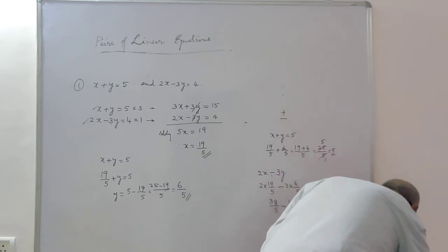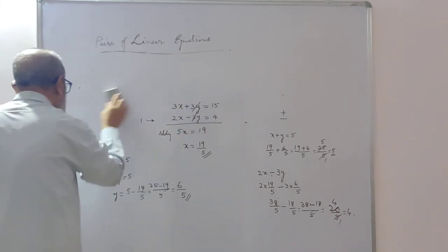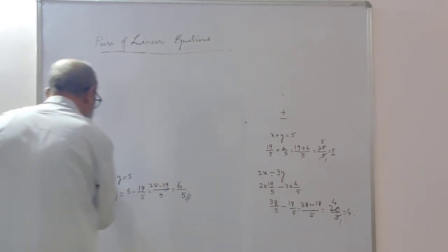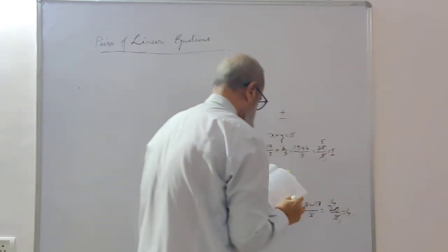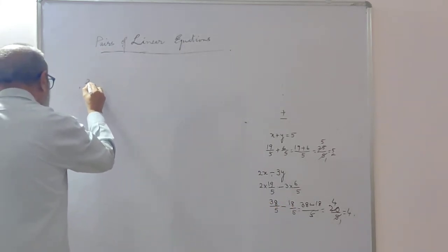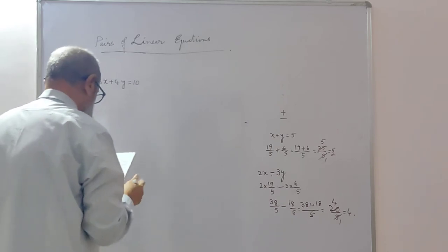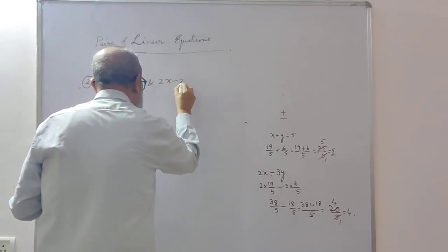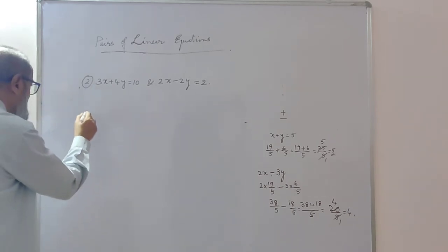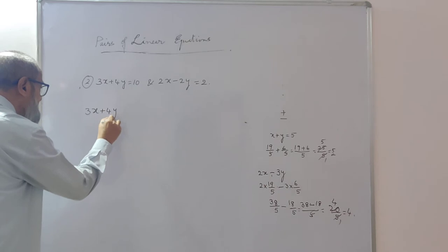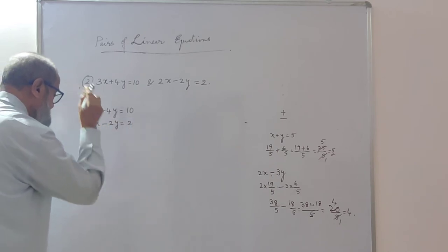The second problem is: 3x plus 4y is equal to 10, and 2x minus 2y is equal to 2. These are the two given equations.